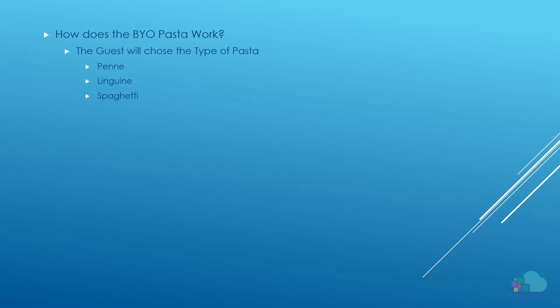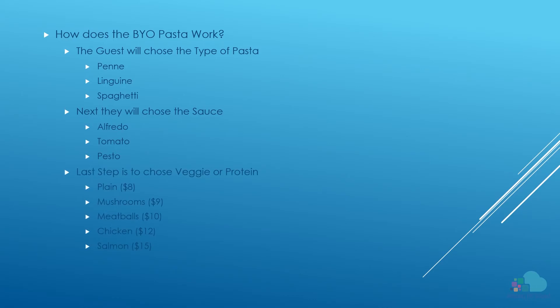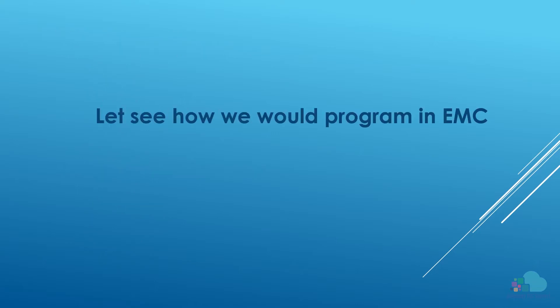So how does the build your own pasta button work? First the guest will choose the pasta type — options are penne, linguine, and spaghetti. Next they will choose the sauce: alfredo, tomato sauce, and pesto. Finally they can choose a vegetarian pasta or add protein: plain, mushroom, meatballs, chicken, or salmon. Note that we also have different prices for the type of protein. Let's jump into EMC and see how we would program this menu item.